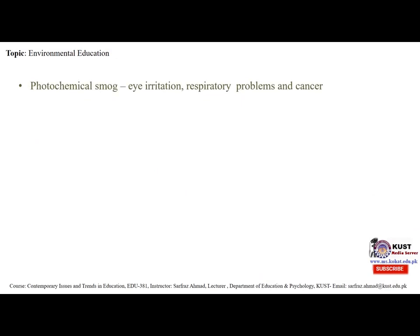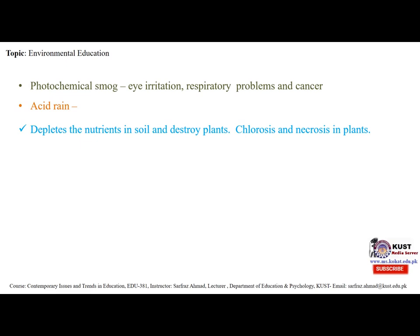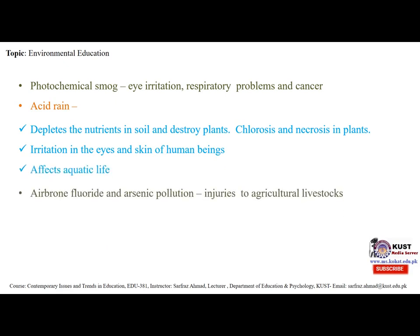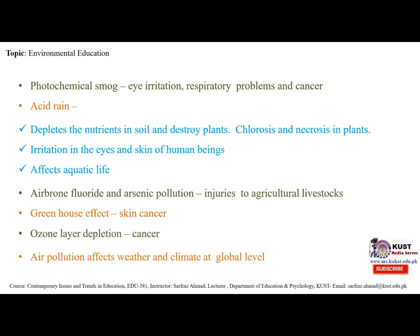Photochemical smog causes eye irritation, respiratory problems and cancer. Acid rain depletes nutrients in the soil and destroys plants. Chlorosis and necrosis occur in plants. There is irritation in the eyes and skin of human beings. It affects aquatic life. Airborne fluoride and arsenic pollution causes injuries to agricultural livestock. Greenhouse effects include skin cancer and ozone layer depletion, which also affects cancer rates. Air pollution affects weather and climate at the global level.